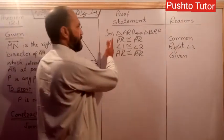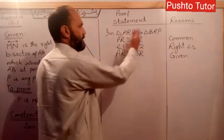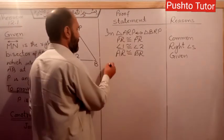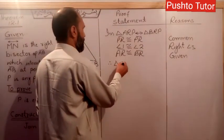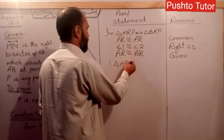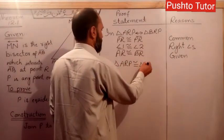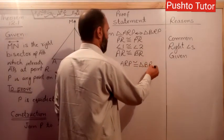Three elements of one triangle are congruent to the other triangle. Therefore triangle ARP is congruent to triangle BRP.